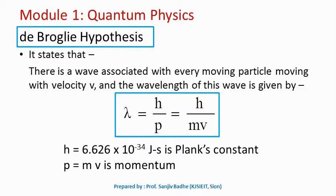The photoelectric effect introduced firm evidence of a particle nature of light. There are some phenomena like interference, diffraction, and polarization which could be explained by considering only the wave nature of light, but to explain the photoelectric effect, particle nature has to be considered. This shows that light exhibits a dual nature.